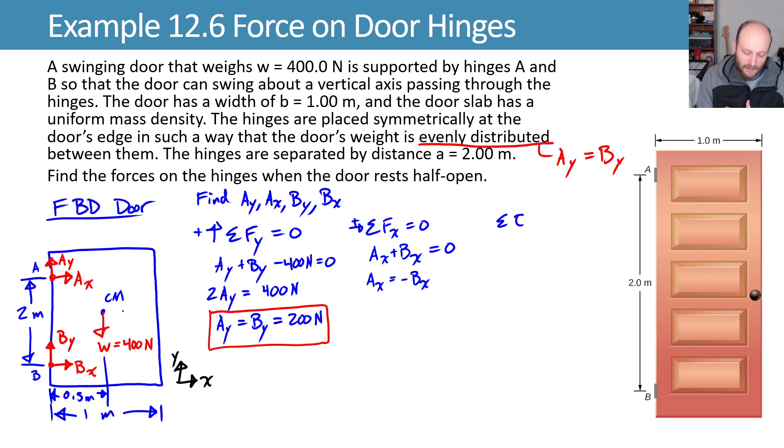If you think about it, picking the center of mass is kind of the worst, because then BY and BX and AX and AY all appear. Probably the best would be either A or B. Let's go ahead and pick B. Could have picked A, would have been just fine.